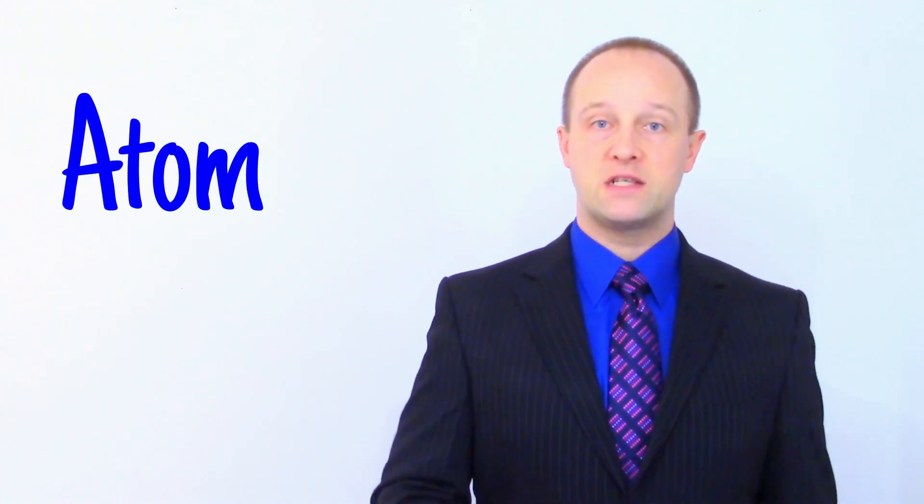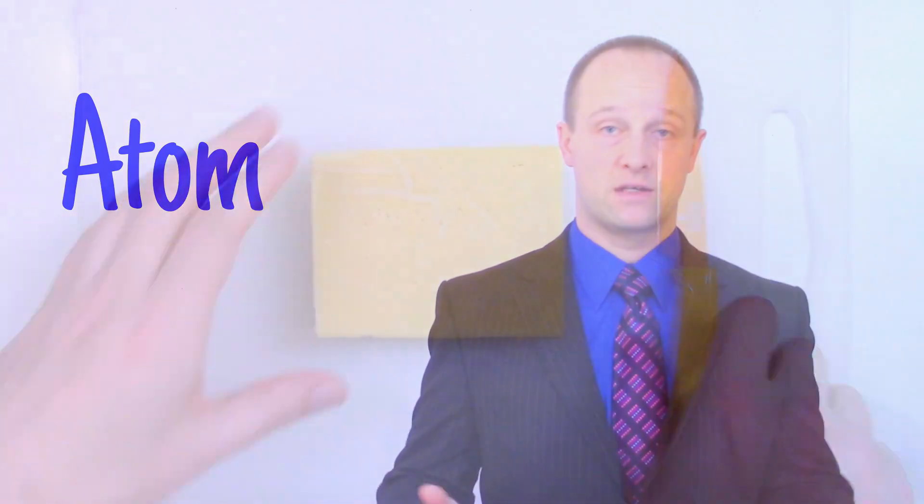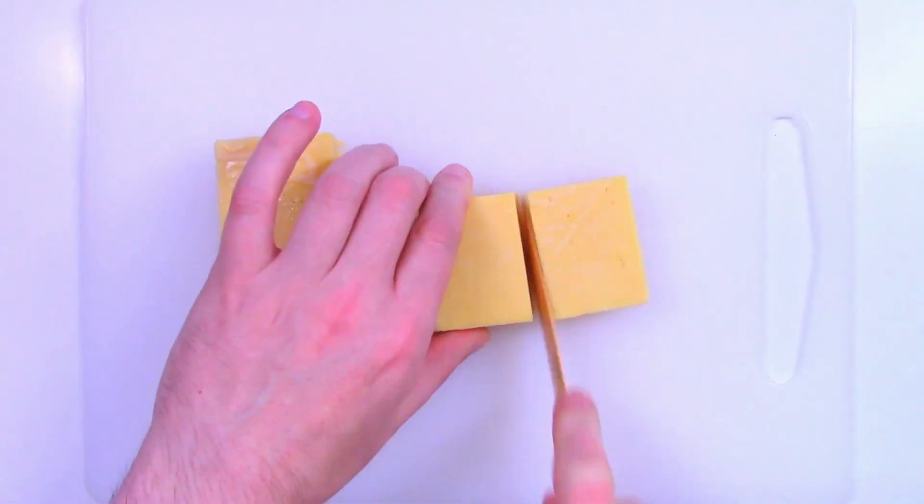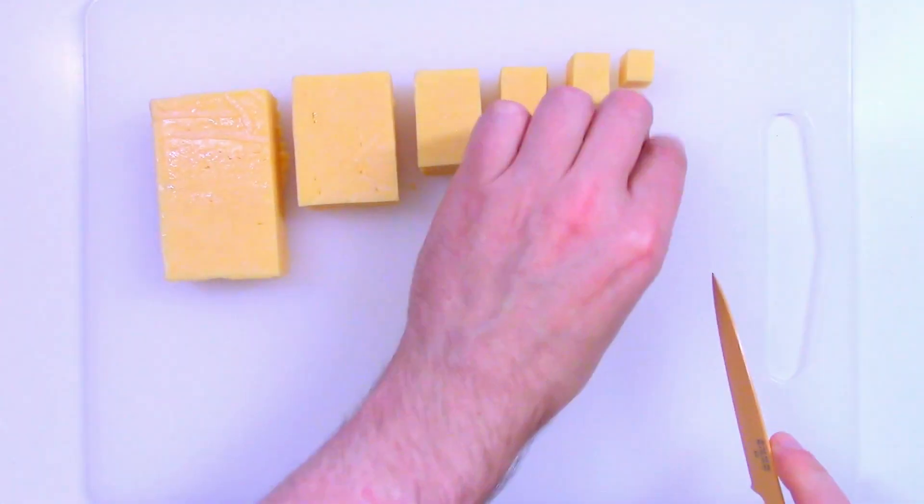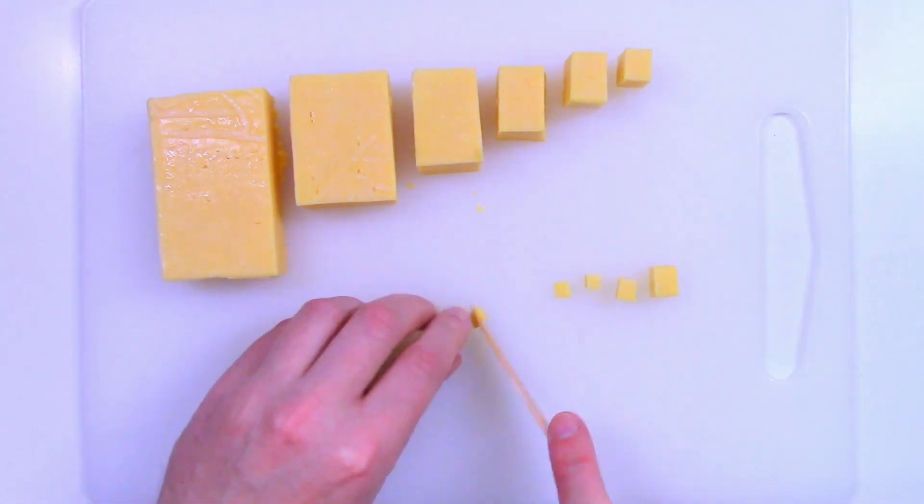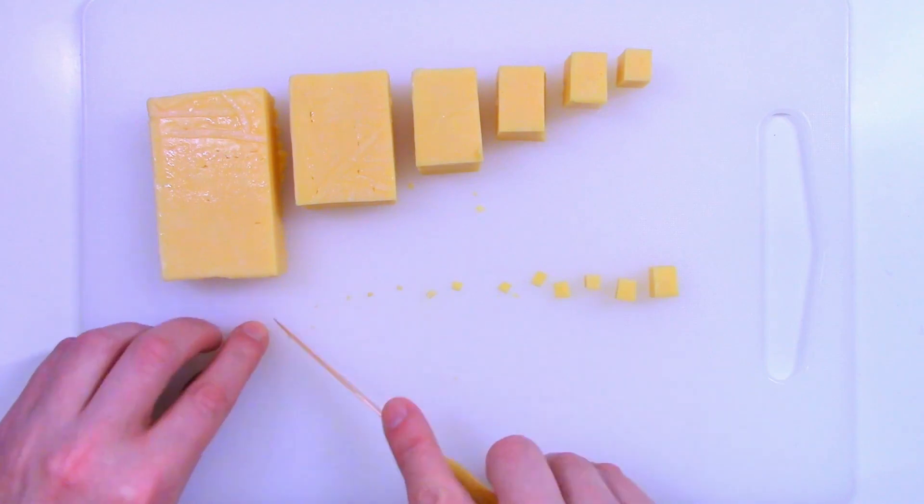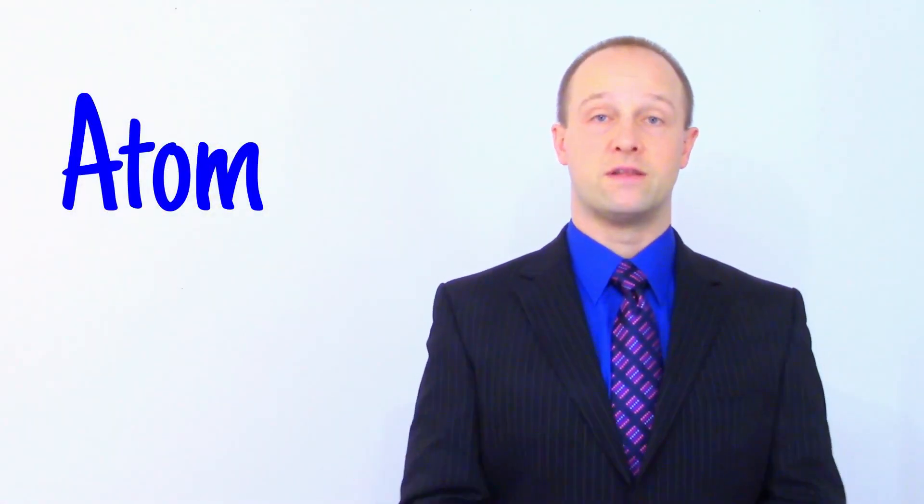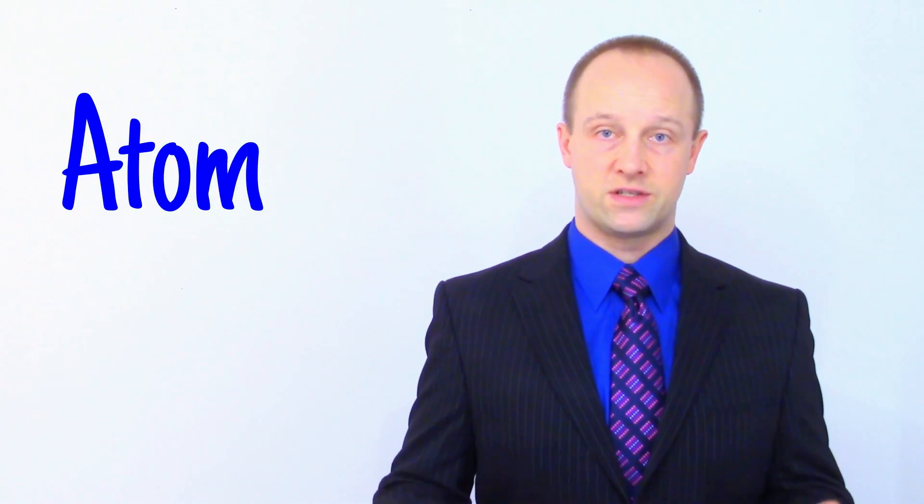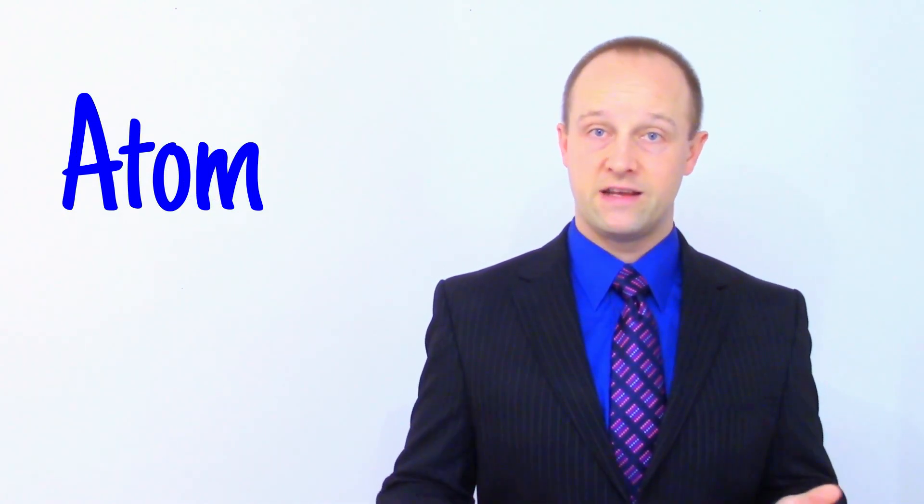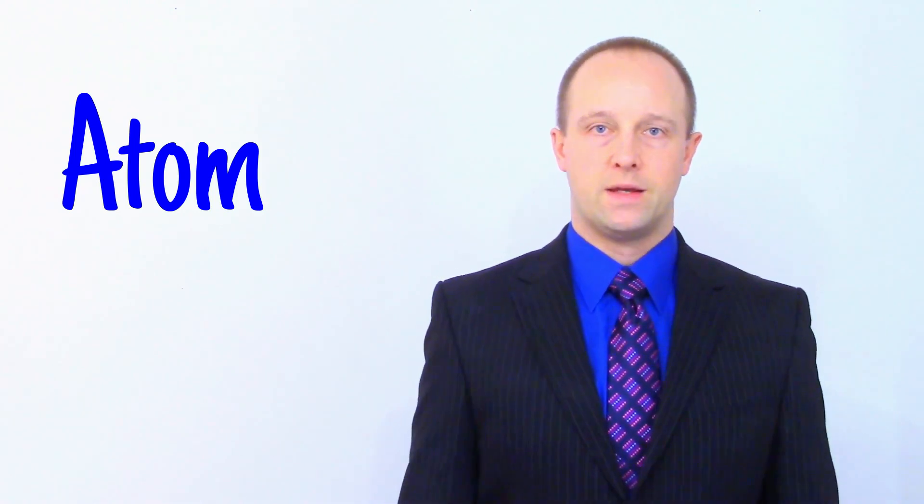To really understand what an element is, you need to know about another ancient Greek concept, the atom. The Greeks believed if you took a piece of matter, for example a large block of cheese, you could cut it in half, then cut it in half again, and again, and so on. But eventually, no matter how sharp your knife is, you'll eventually reach a point where it's impossible to cut it in half again. This uncuttable particle would be a basic building block of matter. The Greek word for uncuttable is atomos, which is where we get our modern word atom. It's also worth noting that the Greeks weren't the only culture to suggest this concept, with ancient cultures in India, for example, also reaching the same idea.